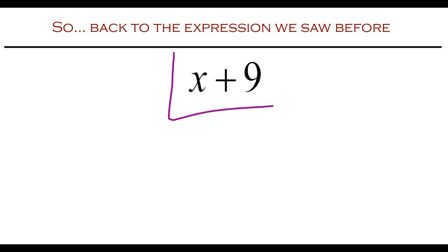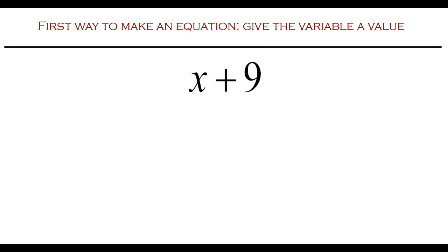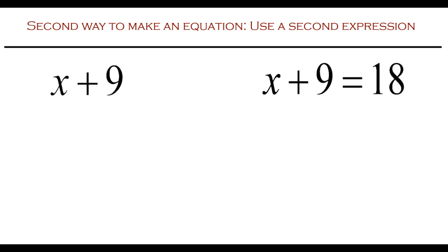Remember back to our variable expression for x plus nine. This expression here, as soon as we know that x has a particular value, we can give an expression that value. But we could do it backwards. Rather than say that x has a particular value, we could instead give the expression a value, and say that x plus nine has to equal eighteen. We say that the value of x plus nine and the value of eighteen must be the same. As soon as we say that, we can start to make interesting observations about the variable and the expression.